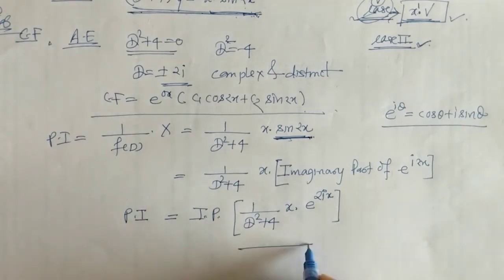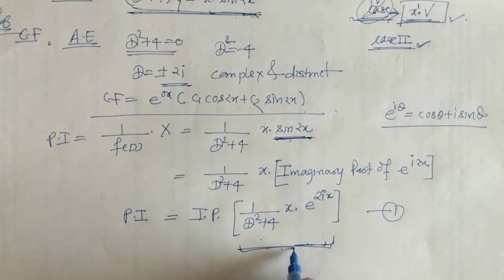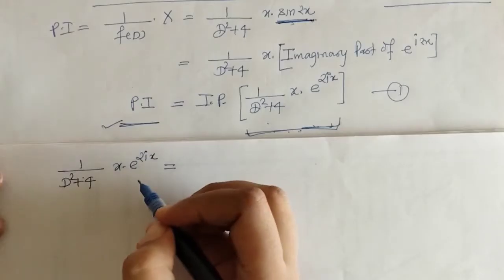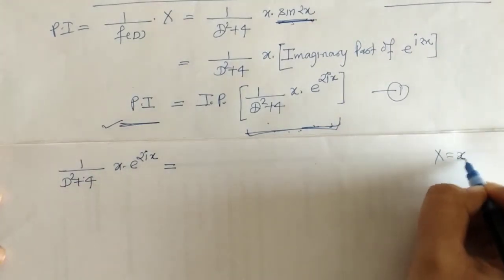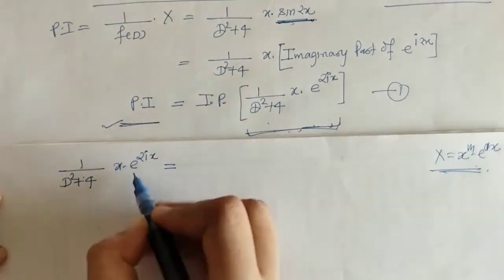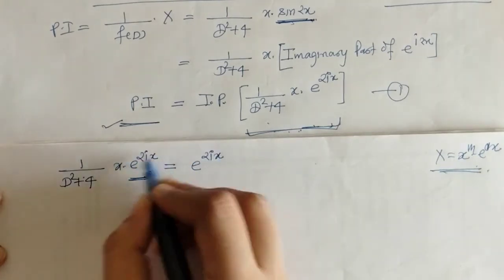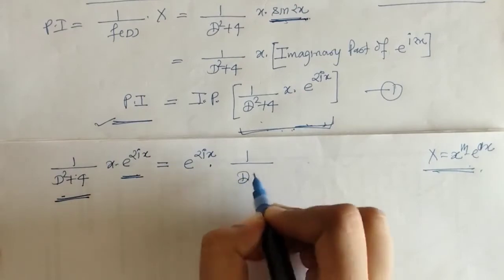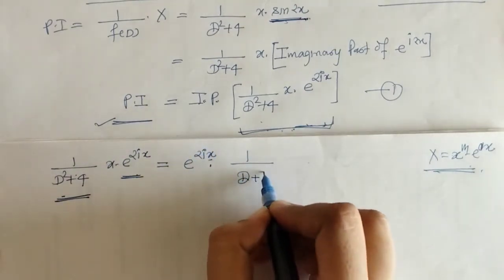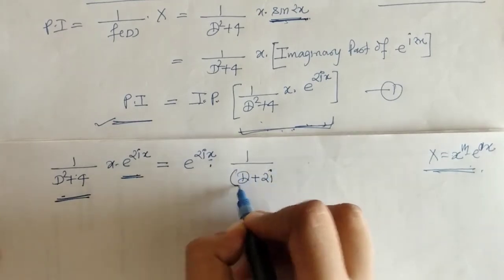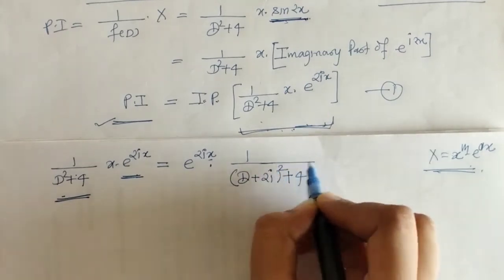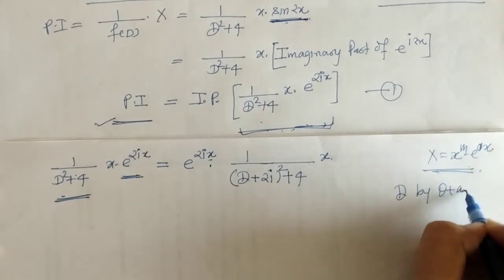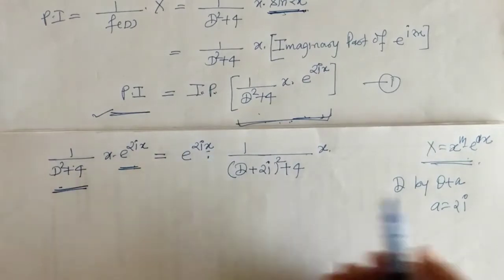Now we will solve this part first. This is of the exponential shift type, so we take e raised to 2ix outside and at the same time replace D by D plus a, where a is the coefficient of x in the exponent, which is 2i. So here we replace D by D plus 2i, and the remaining denominator has this plus 4.